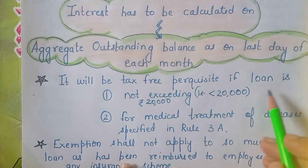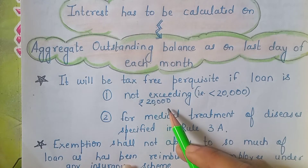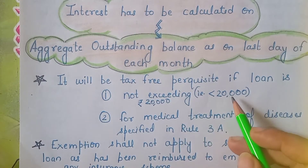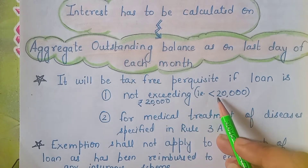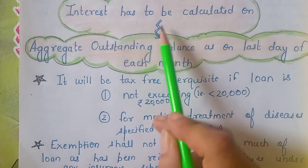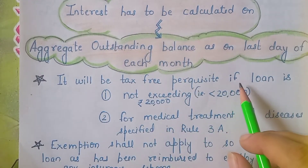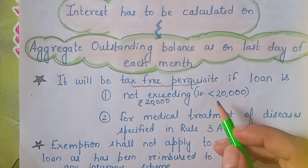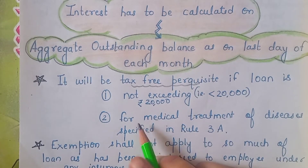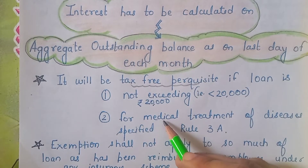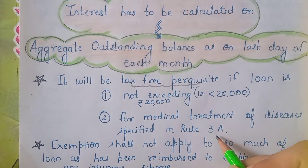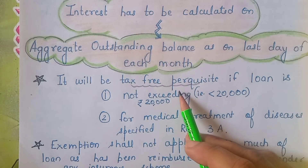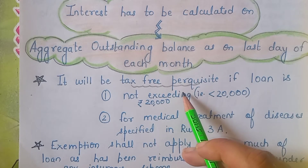Match point number one: this is a tax free perquisite if the loan amount does not exceed ₹20,000. Whether it is ₹15,000, ₹18,000, or ₹19,999 — up to ₹20,000 this is a tax free perquisite, and you will not include it in the gross salary of the employee.